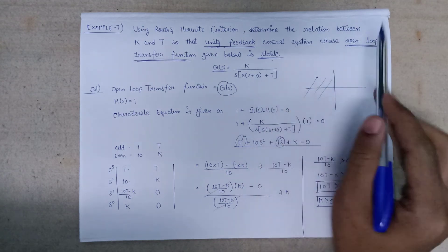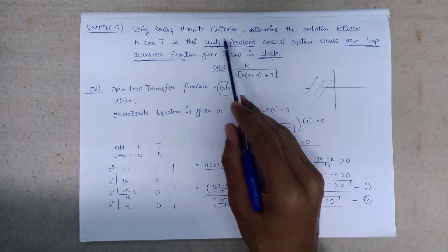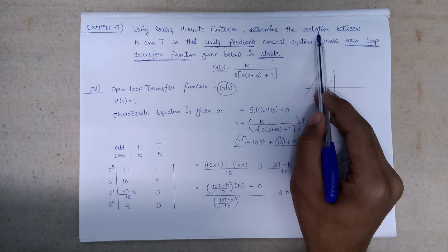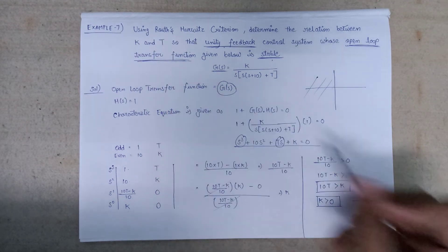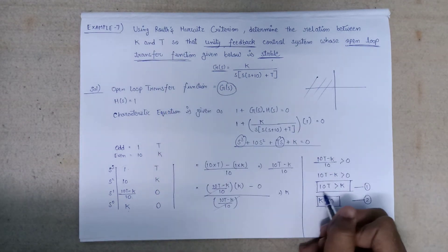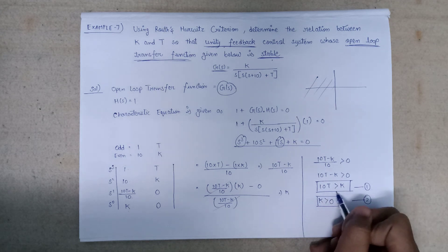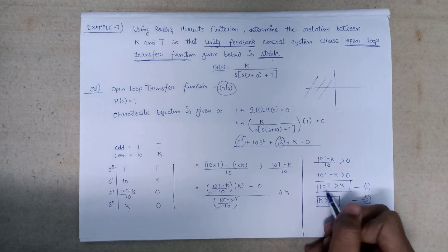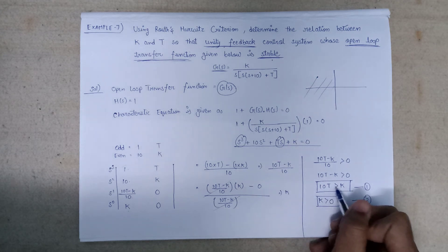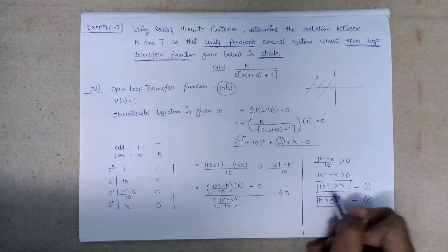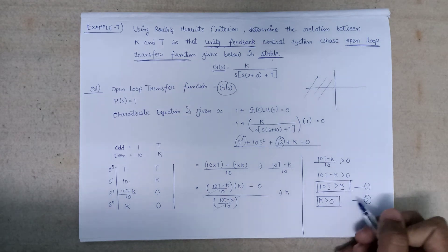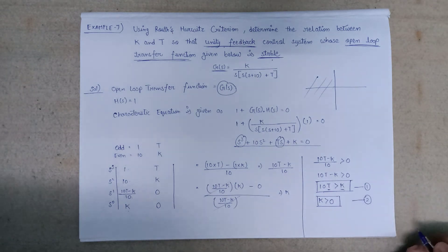In this question we have to determine the relation between k and t. Equation 1 — 10t > k — is the perfect relation between k and t. So, 10t greater than k is the required relation. Thank you.